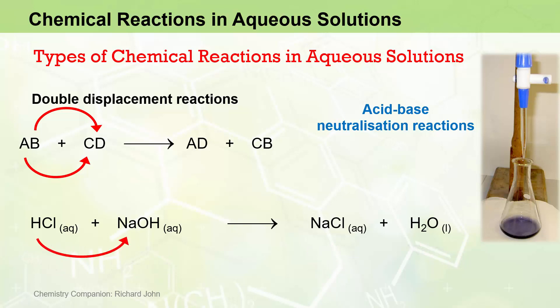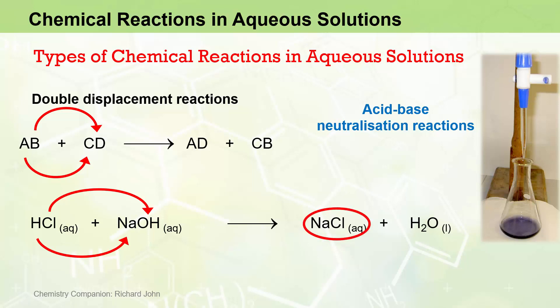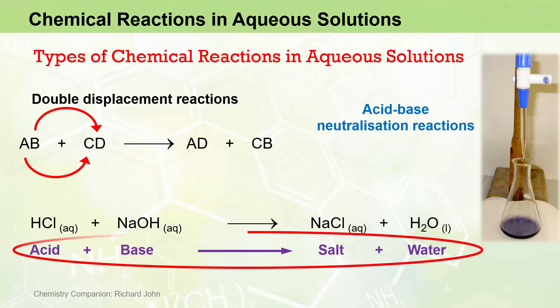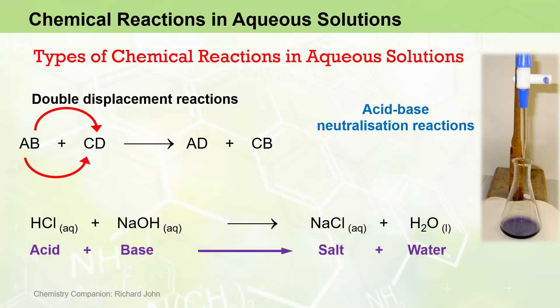The hydrogen cation of the acid displaces the sodium cation of the base to produce liquid water. At the same time, the chloride anion from the acid displaces the hydroxide ion of the base to produce aqueous sodium chloride. This is a classic acid-base neutralisation reaction, where an acid plus a base will give you a salt of some kind plus liquid water.